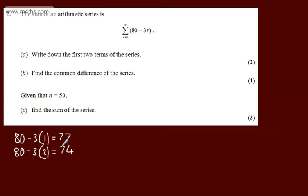In part b, we're asked to find the common difference of the series. The question carries one mark. We can see that this is decreasing by 3 each time, so the common difference d will be minus 3.